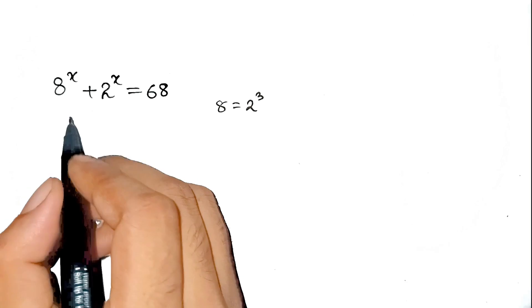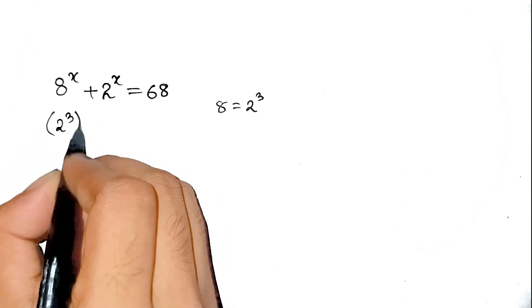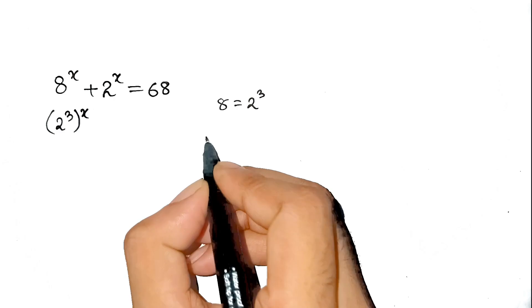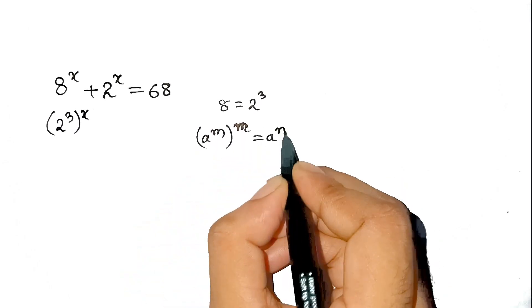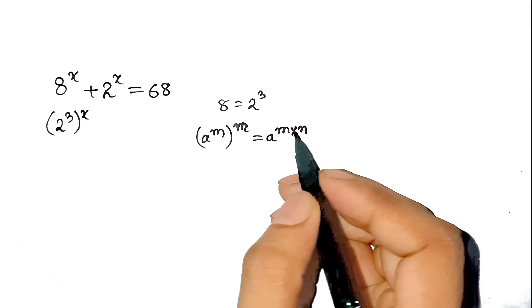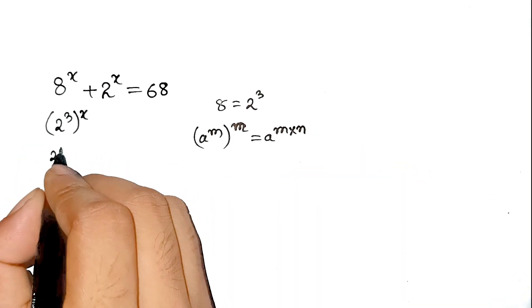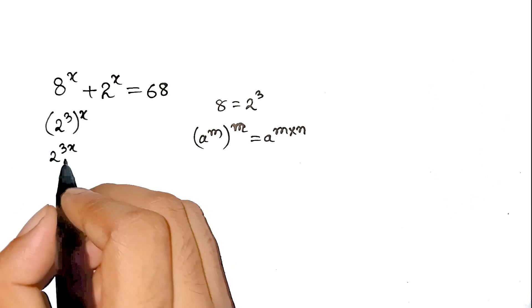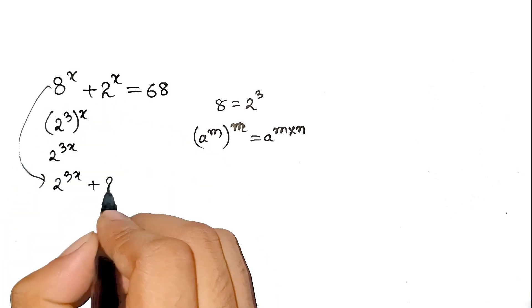Now let's rewrite. 8^x is equal to (2^3)^x. And you know the rule. When you have a^m raised to the power n, it becomes a^(m×n). Which means (2^3)^x equals 2^(3x). Smooth. So now the problem is 2^(3x) + 2^x = 68.